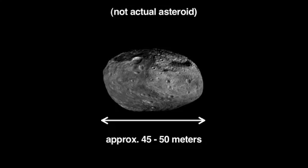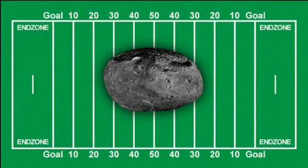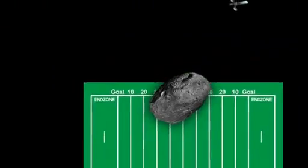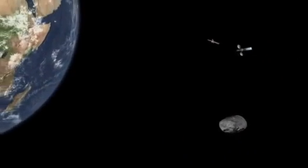Asteroid 2012 DA-14 is an object about half the size of a football field in diameter that is going to pass very close to Earth on February 15th.